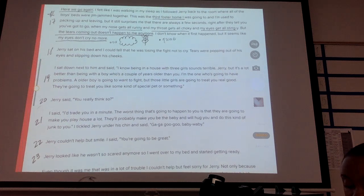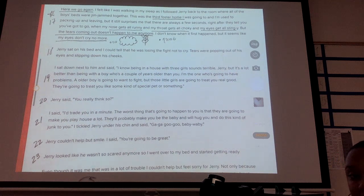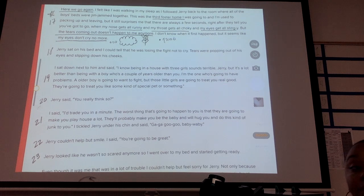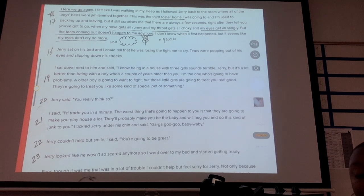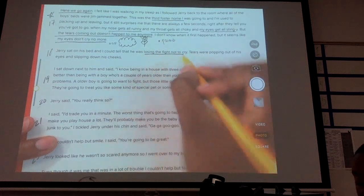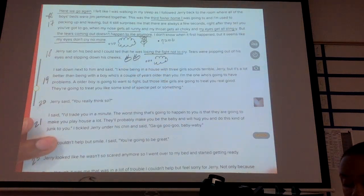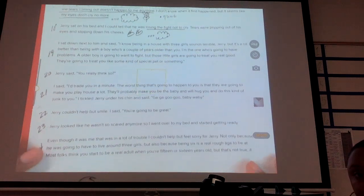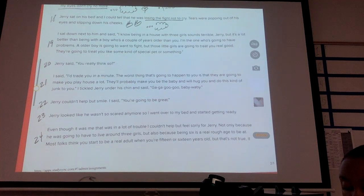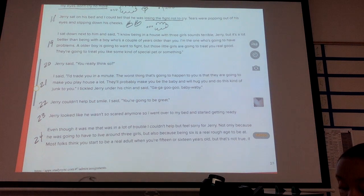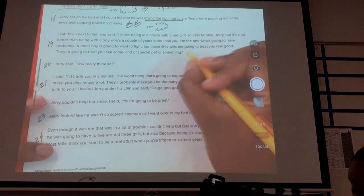So Jerry sat on his bed, and I could tell that he was losing the fight not to cry. So Jerry and Bud's emotions are a little different. Jerry was losing his fight. So this might be something that foster children actually do, where they don't cry, or they don't show their emotions, or they're just done. They're numb to this. But it looks like Jerry, he's losing his fight. Tears were popping out of his eyes and slipping down his cheeks. I sat down next to him and said, I know being in a house with three girls sounds terrible, Jerry, but it's a lot better than being with a boy who's a couple of years older than you.